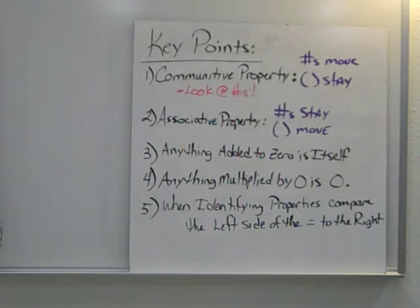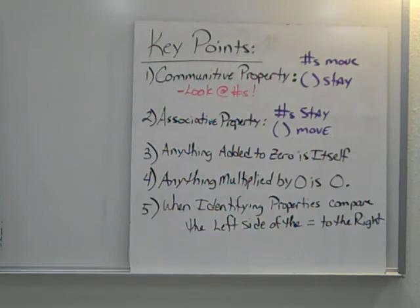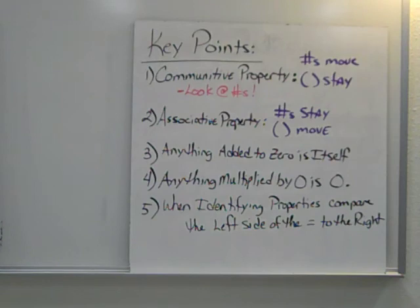Anything added to zero is itself, not zero. Anything multiplied by zero is zero. Anything times one is itself, not one. And again, when identifying properties, compare the left side of the equal sign to the right-hand side.